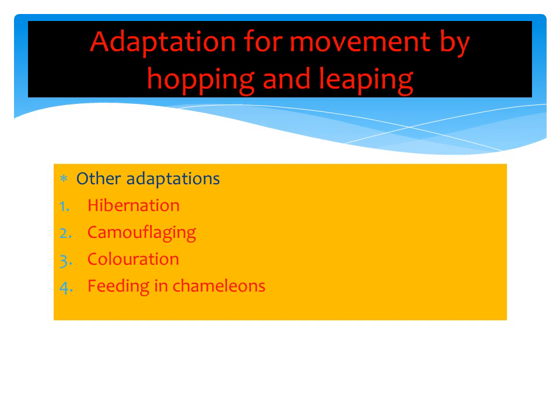Adaptation number two: camouflage. Camouflage is the ability of an animal to change its skin color to match that of the environment, so that it becomes difficult for the enemy to attack the animal. An example is the chameleon, which camouflages to hide from predators. When they change color, they are not easily seen.